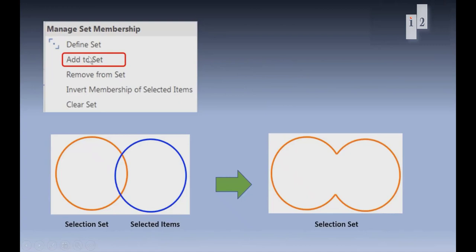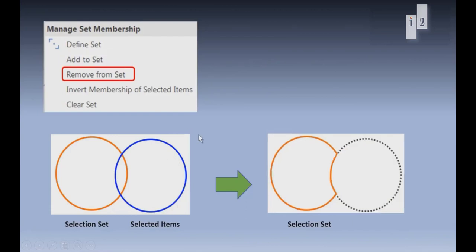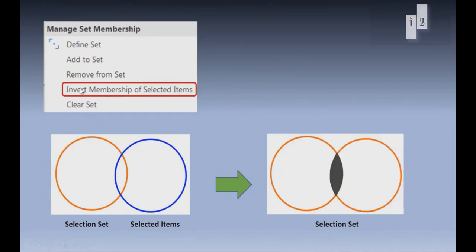Add to Set will add to the selection set all the items which are currently selected on the chart. Remove from Set removes all the items which are currently selected and which are part of the selection set. Invert Membership of Selected Items will add to the set all the selected items except those already in the selection set, and will remove from the selection set the items which are in both groups.